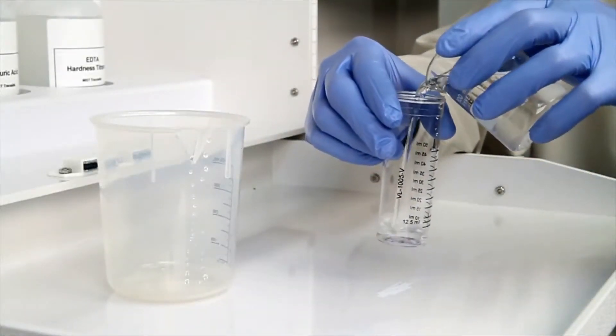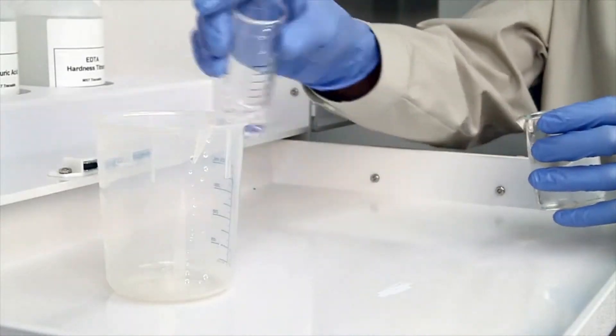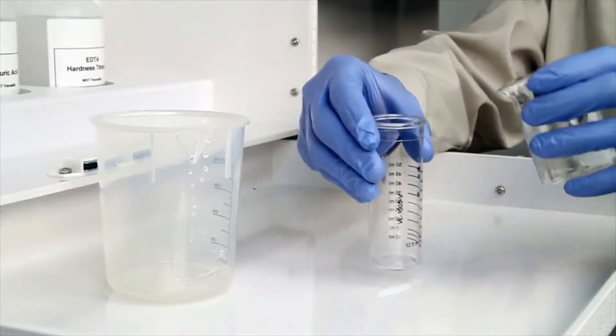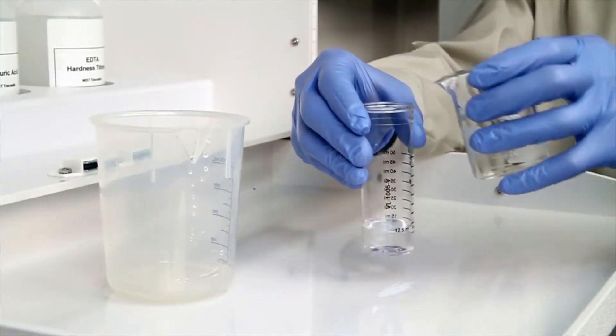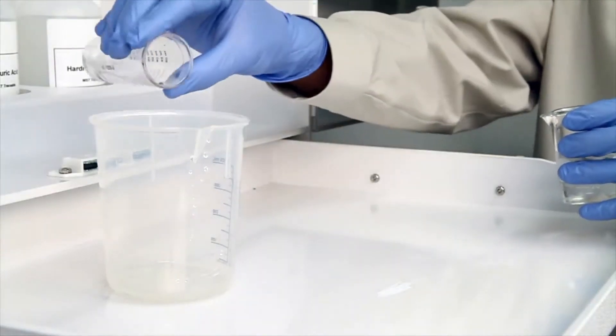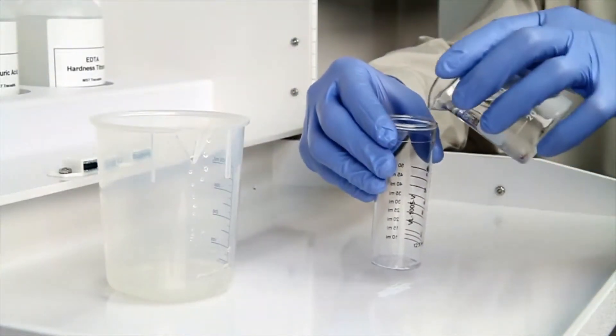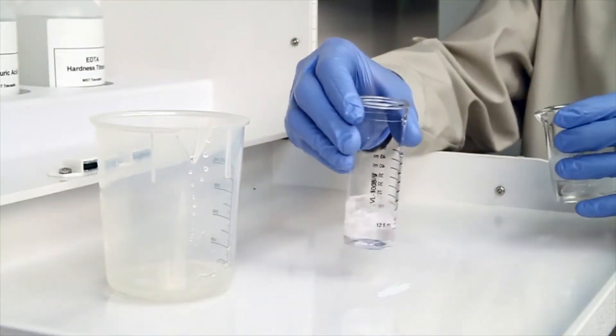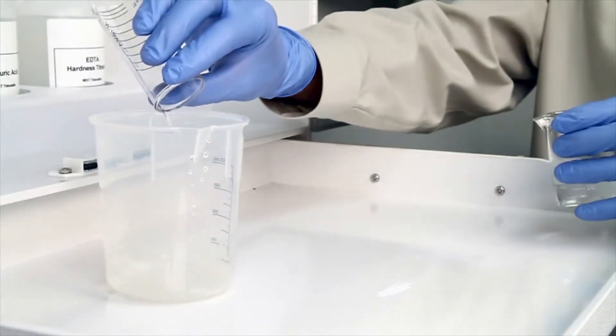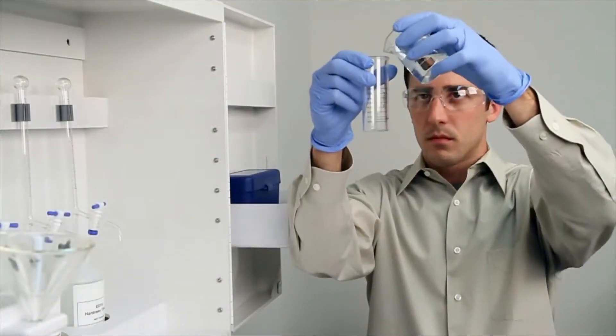The first step according to the endpoint ID procedure is to gather an accurate sample. The smallest change in sample size will lead to inaccurate results. Before gathering your sample, it's important to rinse the vial three times with the sample to be tested. This minimizes the chance of contamination from a previous titration.